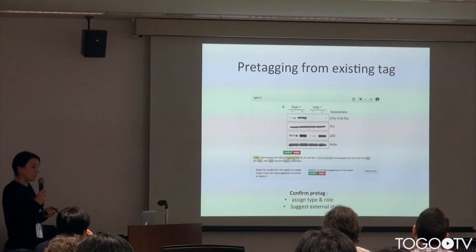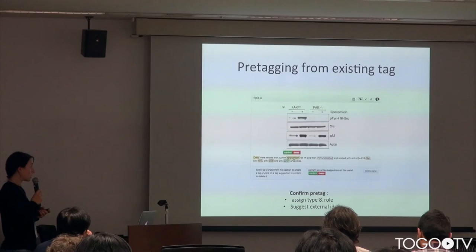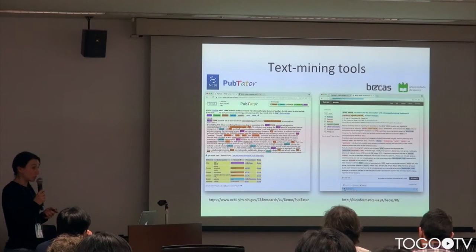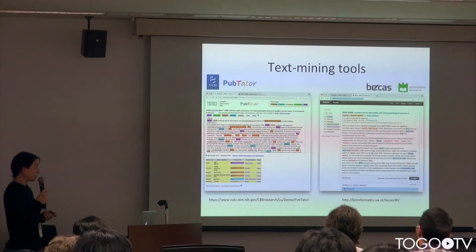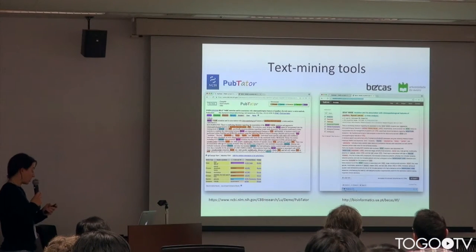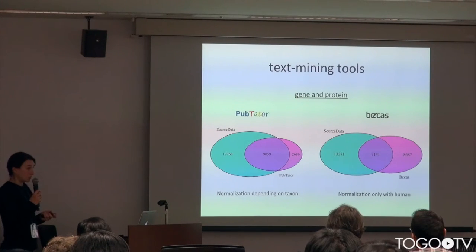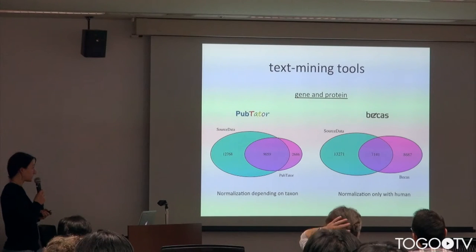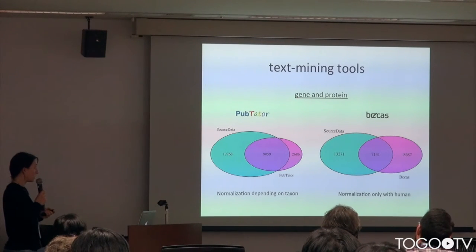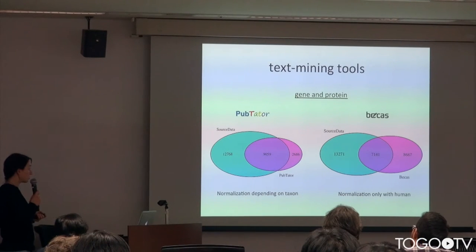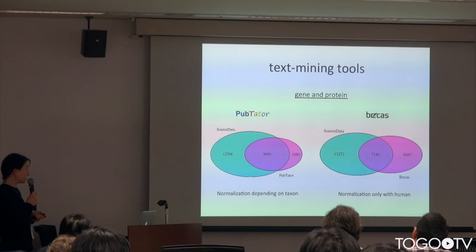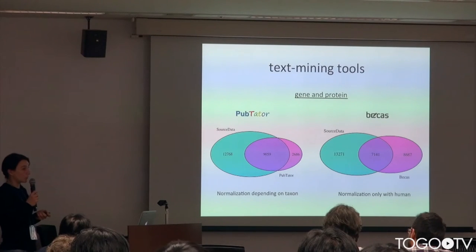But this pre-tagging system is quite simple and we need to improve it. That's why we tried two text mining tools a few months ago: Peptator, developed by the NCBI, and BKS, developed by the University of Aveiro in Portugal. We tested these tools and compared the results with SourceData tags. These are the results only on gene and protein entities. Peptator found around half of SourceData's tags, and also found some tags that SourceData did not tag.